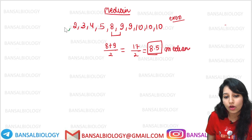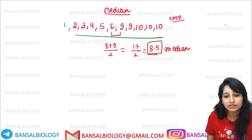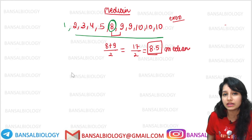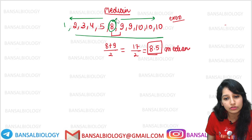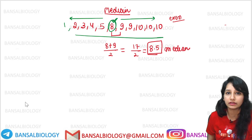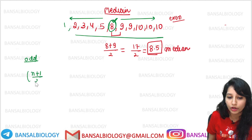Now I have to insert another number here, so the total will be 11. In the condition of 11, obviously you will have a clear median. For this condition, you can use the formula: n plus 1 upon 2.